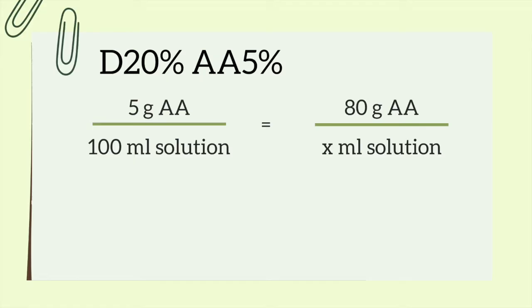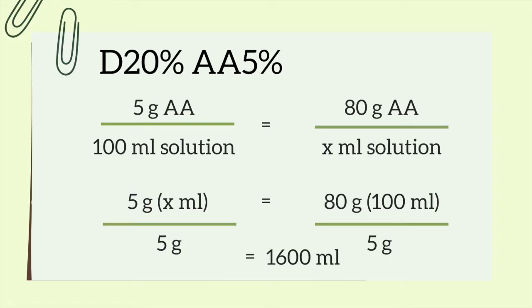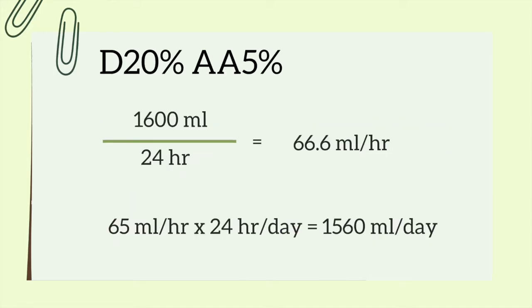For this example, let's pretend I only have a D20% and a 5% amino acid solution. I can choose any gram of protein within my range — I'll pick 80 because it's in the middle. Here's how I set this up: 5 grams of amino acid over 100 milliliters of solution equals 80 grams of amino acid over X milliliters. I then cross multiply and divide by 5. That gives me how many milliliters I need in my bag. To figure out the rate, divide by 24. That gives me 66.6 milliliters per hour.